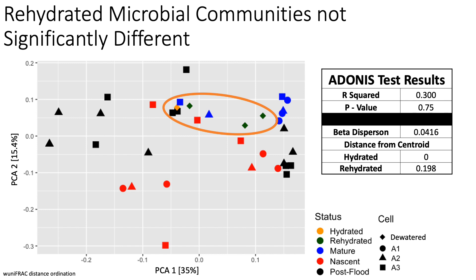What you see is a weighted UniFrac ordination. For reference, a biomat is considered nascent prior to completing a growing season and mature once it has been through a full growing season. Each sample is indicated by a point, with the shape and color determined by the cell the sample was taken from and the status of that cell. The closer points are to each other, the more similar the communities within those samples are. The microbial communities from the rehydrated cells, seen here within the orange circle, are not significantly different from that of the constantly hydrated cell. Interestingly, all samples from the experiment, regardless of status, fall within a similar area as the mature cell samples, potentially demonstrating the microbial community has similar homogeneity to mature biomat.